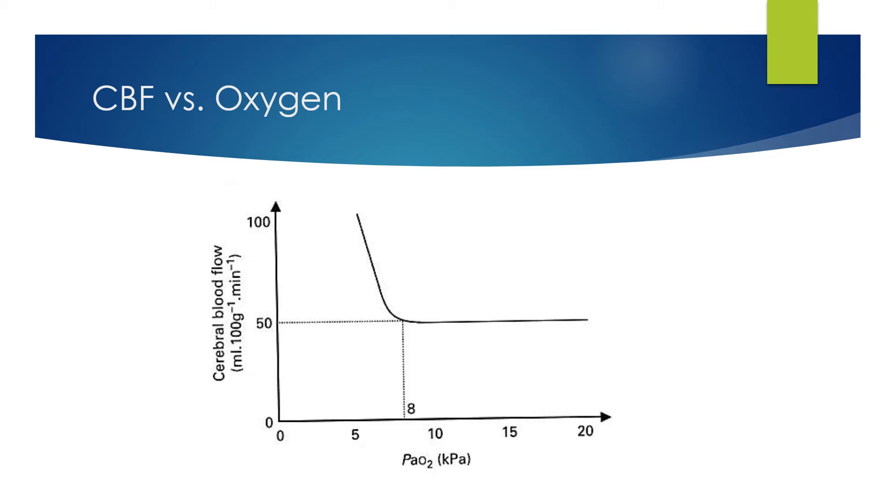...versus oxygen tension within the blood. PaO2 values of 8 kilopascals or less will lead to the brain crying out for more oxygen and therefore increasing cerebral blood flow. This is why it's critically important to avoid hypoxemia in patients with traumatic brain injury.